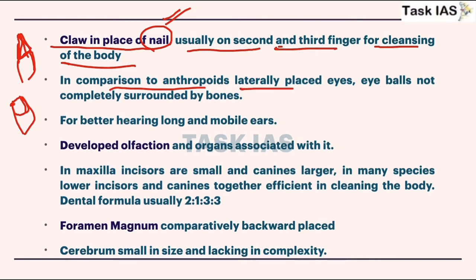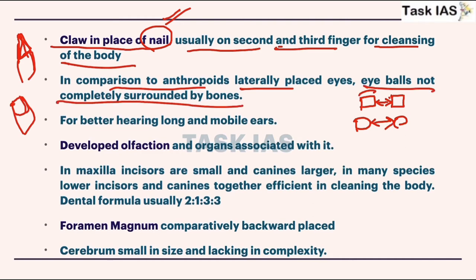Their eyes are placed laterally — if we compare human or ape eyes, the distance between eyes is small, but in prosimians eyes are placed laterally so the distance between eyes is greater. The eyeballs are not completely surrounded by bones. In humans and great apes, some kind of bony circuit is present so the eyes are safer, as eyes are delicate organs needing protection.